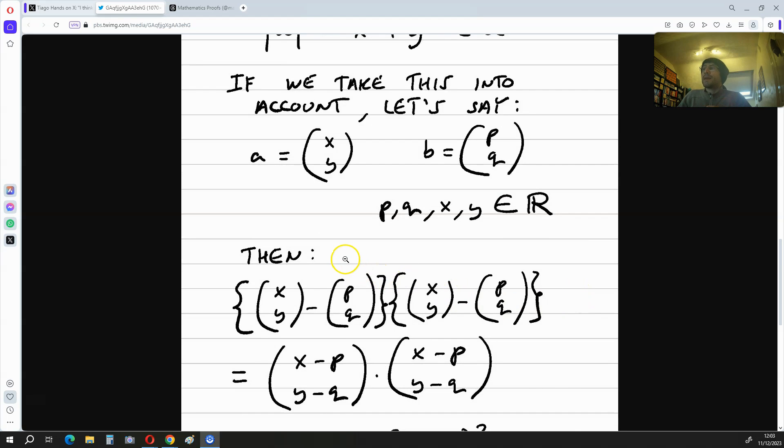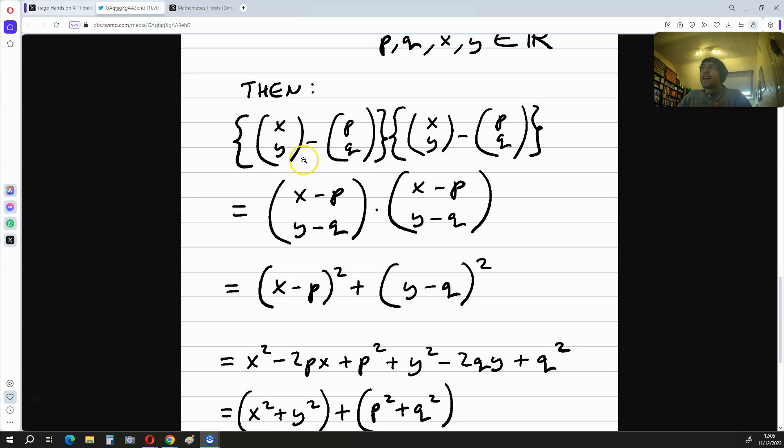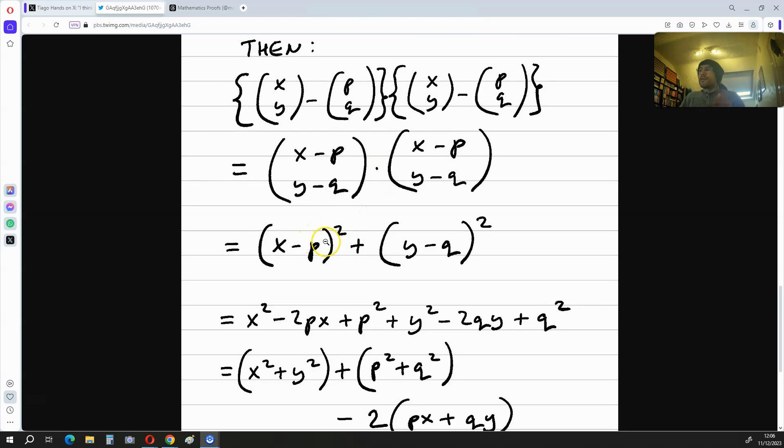then this is going to mean that a minus b times a minus b is equal to x minus p, y minus q, times x minus p, y minus q. From here, we get x minus p squared plus y minus q squared.